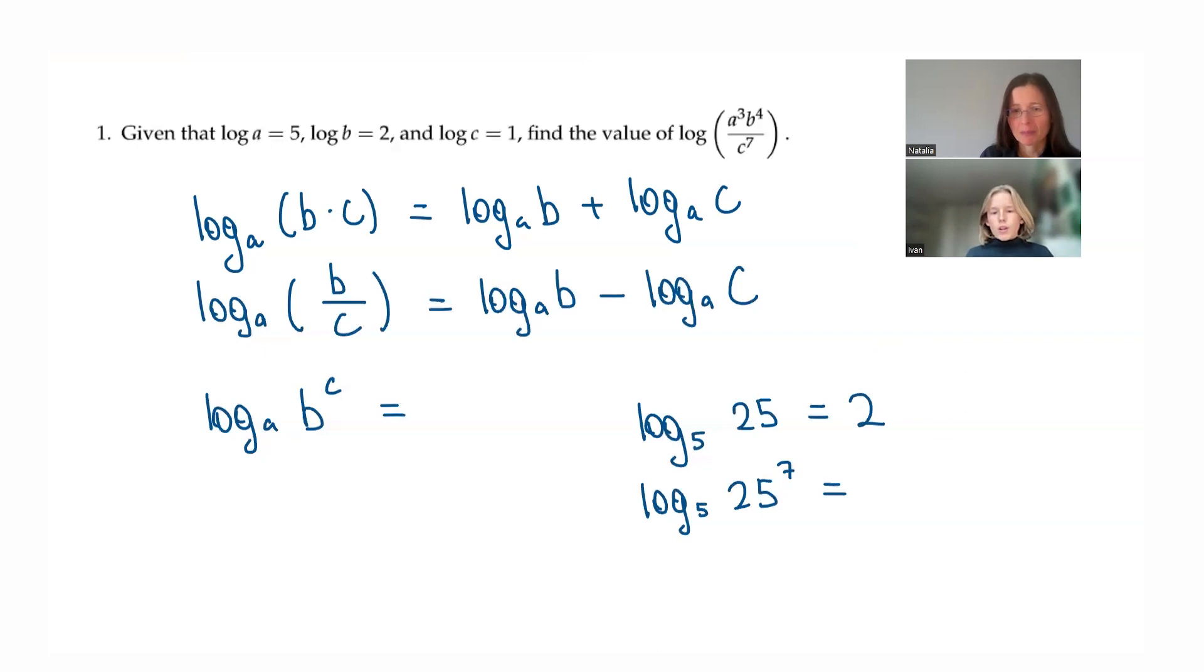So 25 to the 7th is 25 times itself, 7 times. Therefore, by the first rule that you showed us, it's going to be 2 times 7. Uh-huh. Because we can split it into the product of 25, 7 times. And it means it will be the sum of log 5 of 25, 7 times. Mm-hmm. Very good. That's one way.